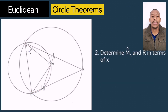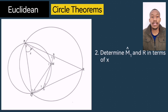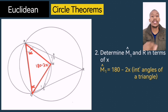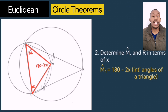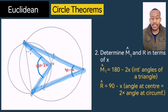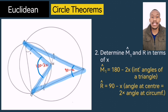Moving on to the second question: determine angle M1 and angle R in terms of X. Angle M1 is quite easy to find since we now know that P2 and Q1 are both X. We can say angle M1 equals 180 degrees minus those two X's — so 180 minus 2X. Therefore angle R would be half of angle M1, because of the angle at center equals two times the angle at circumference theorem. That makes angle R equal to 90 minus X — it's half of the 180 and half of the 2X.